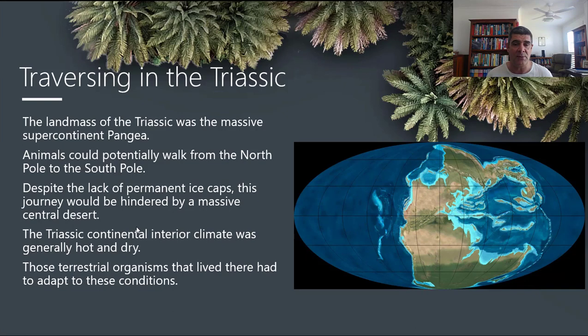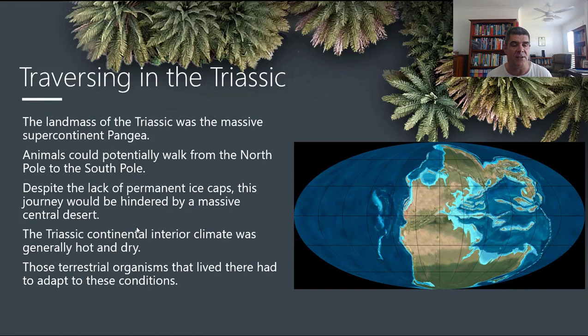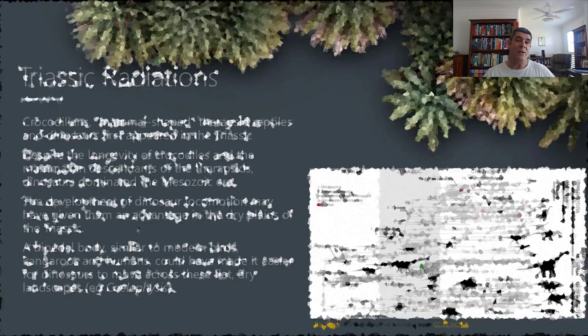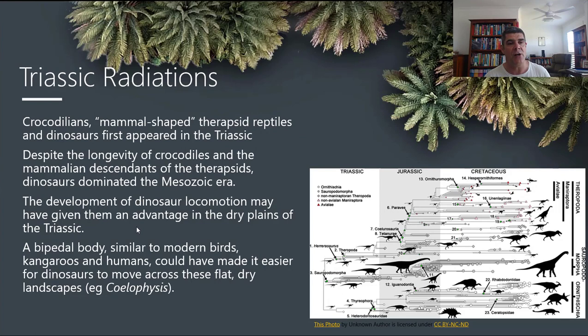If you were an organism that was able to, through different adaptations and certain types of traits, survive that sort of environment and cross into it, there would have been quite significant rewards on the other side. Perhaps you might have even stayed in that environment if it suited your traits. Terrestrial organisms living in these environments, crossing these massive land bridges that no longer exist, had to adapt — possessing traits that enabled them to survive these very hot, dry conditions. In the Triassic, we see a range of different radiations.